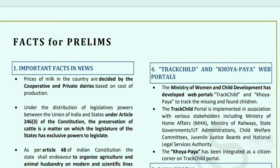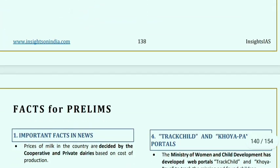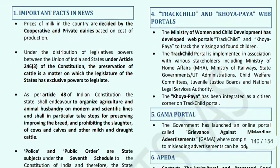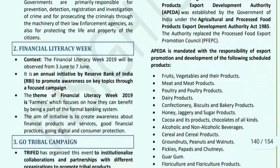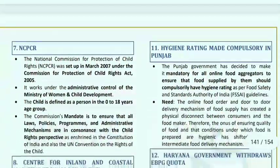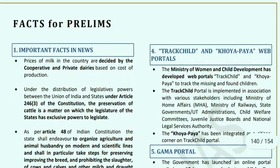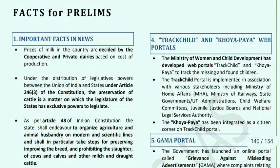Now we will read some facts for prelims. Regarding milk prices: these are decided by cooperative and private dairies on the basis of cost of production. Under the distribution of legislative powers between the Union of India and states (Article 246), cattle preservation falls under the state list, where states have exclusive powers.